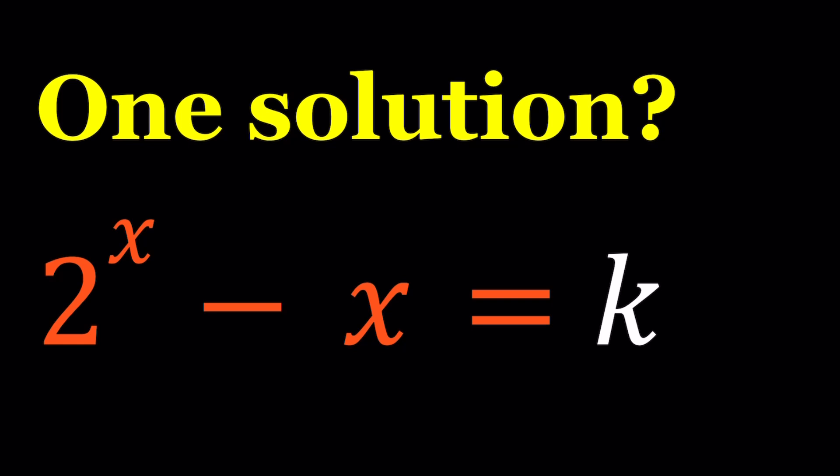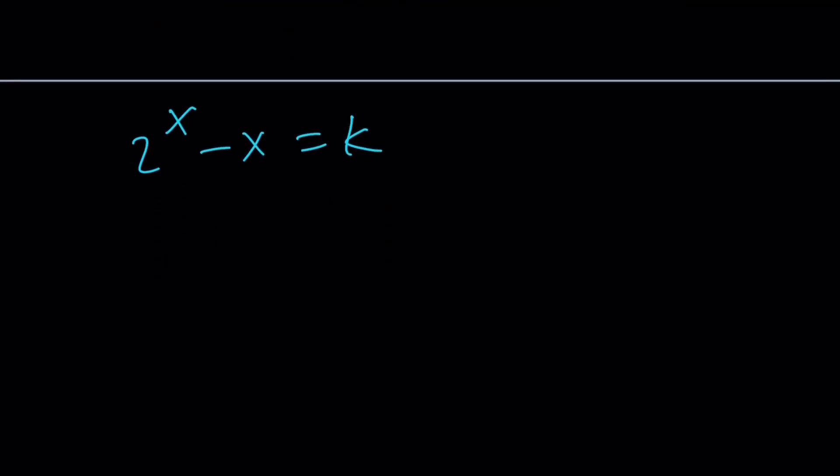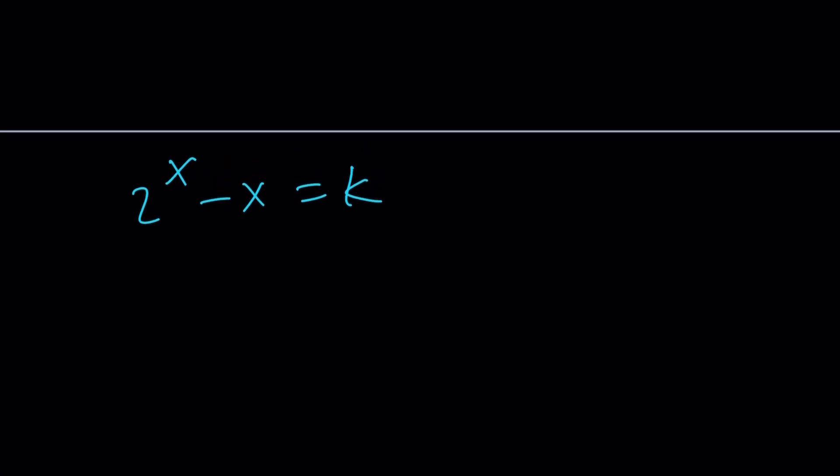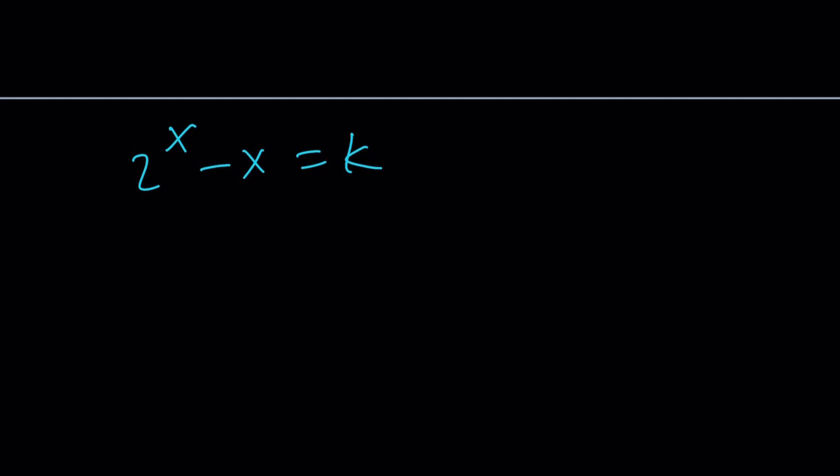And I'm also going to show you a graph at the end. But before that, we're just going to do some hand graphs, hand drawn graphs. So we want this equation to have a single solution, 2 to the power x minus x equals k. For which values of k this is going to work? Alright? So here's what I'm going to do first. I'd like to make this or put this in a nicer form.